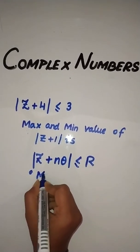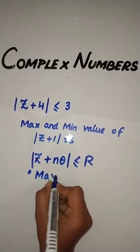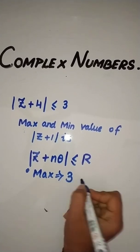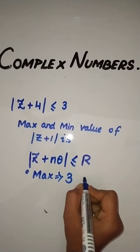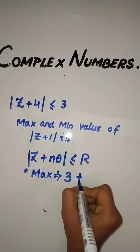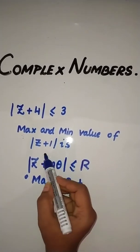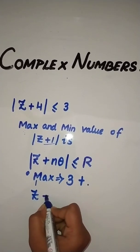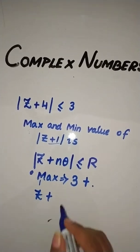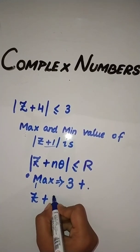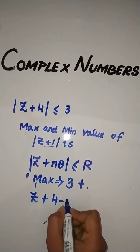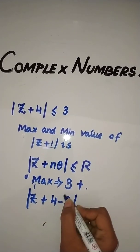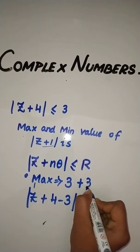For the maximum value, we know 3 is the real number. This should be added with the modulus. To get mod z plus 1, we do 4 minus 3, so we take this 3 here.